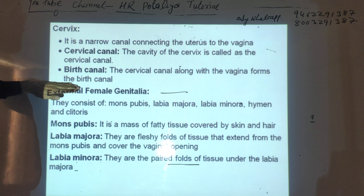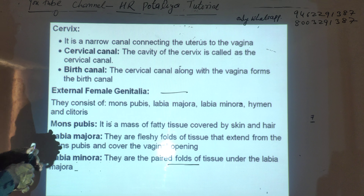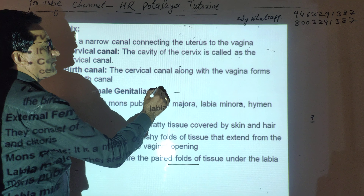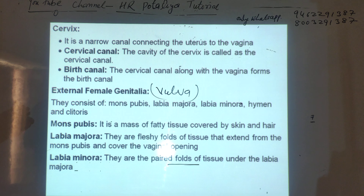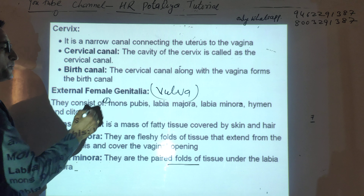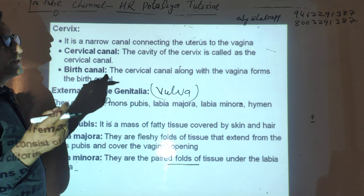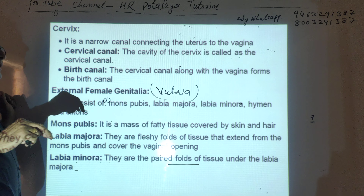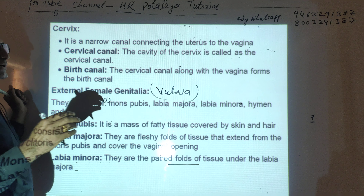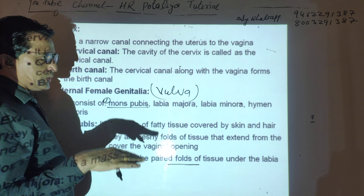The last major division is the external genitalia, also known as the vulva. The vulva consists of five major parts. Number one is the mons pubis — outside the female body there is a thick fatty layer with hairs, that is the mons pubis. The first outer layer after the mons pubis is the labia majora.